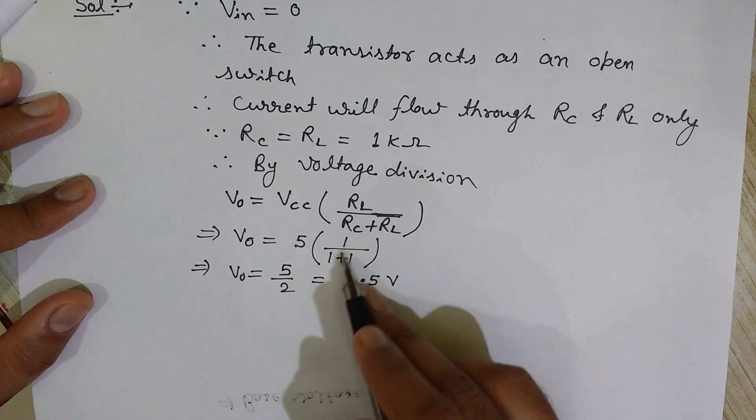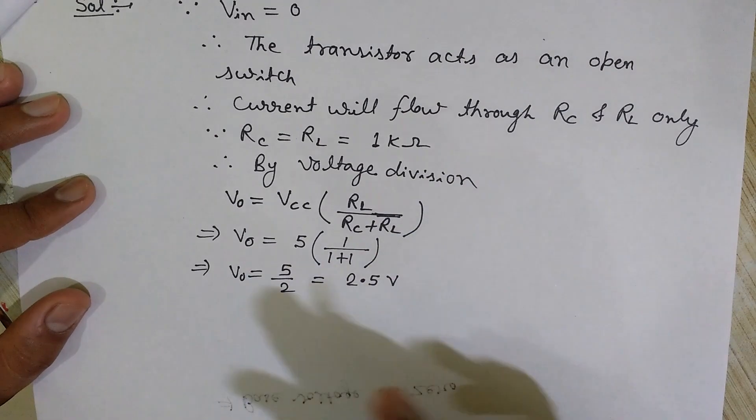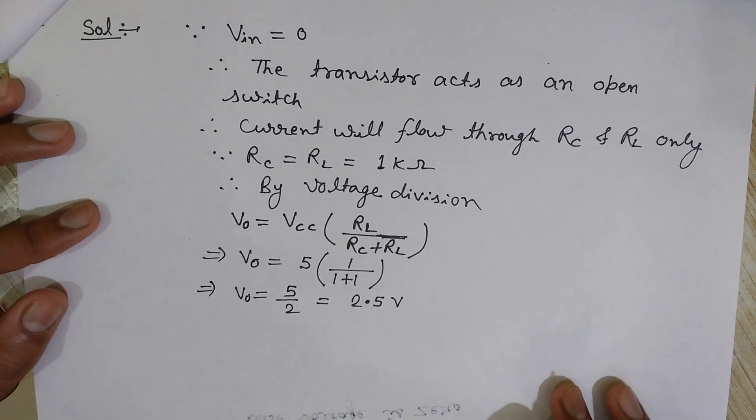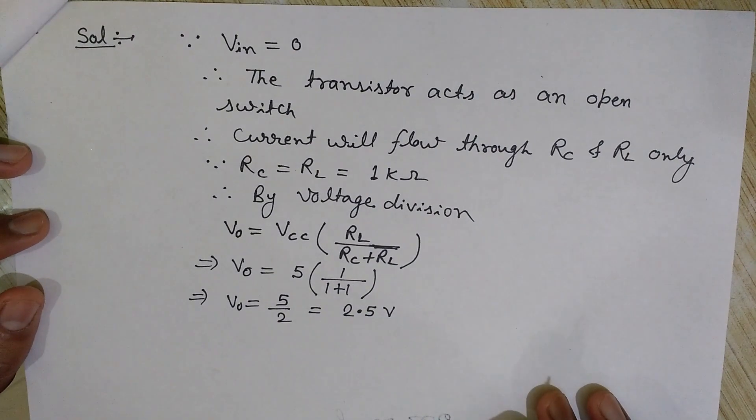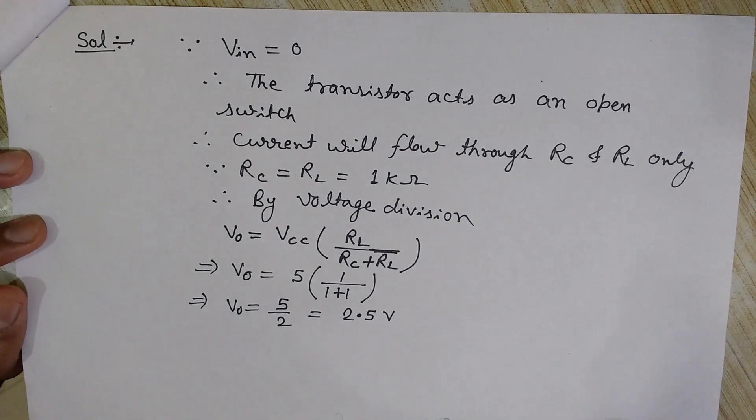So this was actually a very simple problem, and I already told you that this is just to explain you the basic concept behind BJT, how it works as a switch.